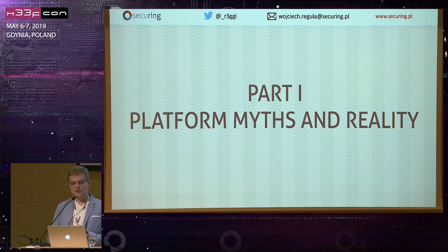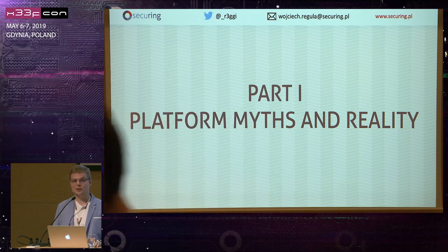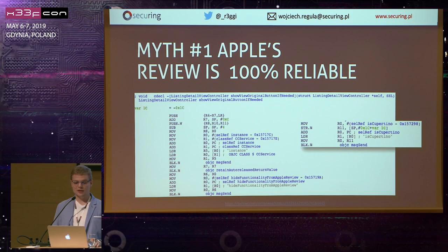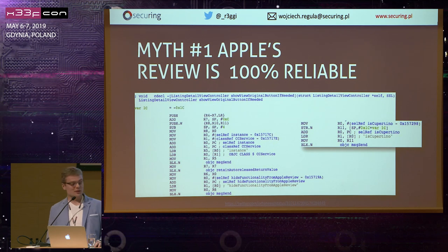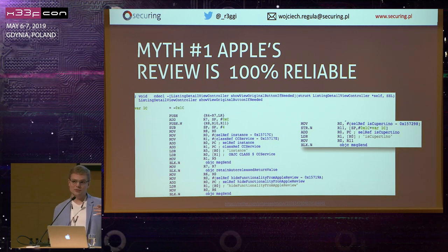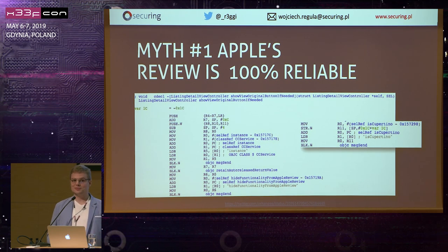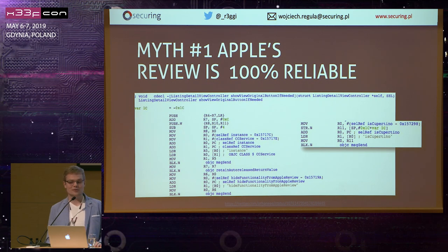We're going to part one: platform myths and reality. I'll show you that we cannot rely on the iOS platform 100%. The first myth is that Apple's review is 100% reliable — and it's not true. Guys from Guardian Mobile Firewall found an application they reversed — a malicious application. What this code snippet does is check whether the application was run in Cupertino, where Apple is based. If they do a dynamic review, the functionality was hidden. So it was a pretty neat bypass of the App Review.